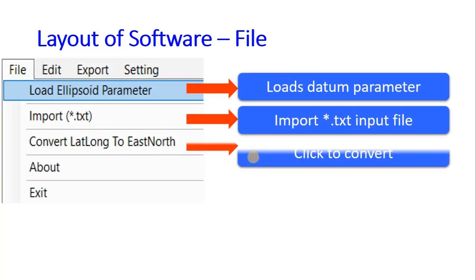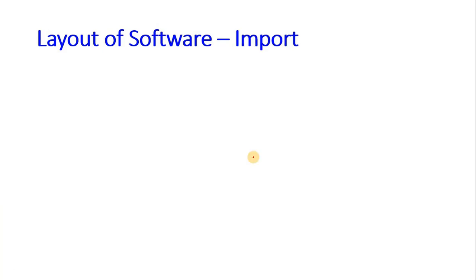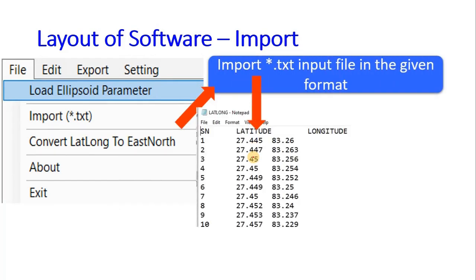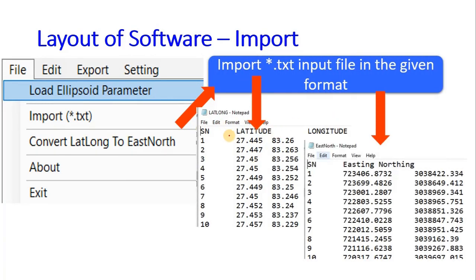These are the file menu options — they do what the name suggests. You can import either latitude/longitude or UTM data, depending on what you want to convert. If you want to convert latitude/longitude to UTM, then you need to import latitude/longitude. They are all tab-delimited.